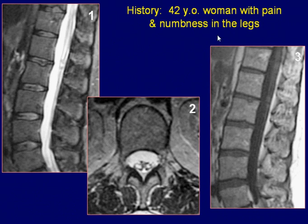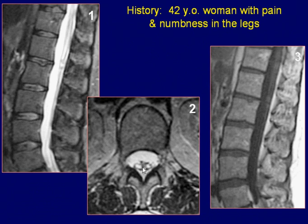A 42-year-old woman with pain and numbness in the legs. Sagittal T2-weighted image of the lumbar spine shows a subtle high-intensity lesion at the conus. Axial T2-weighted image confirms the hyper-intense lesions at the conus.